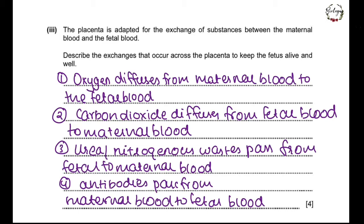The next question talks about the placenta. The placenta is adapted for the exchange of substances between the maternal and the fetal blood. Describe the exchanges that occur across the placenta to keep the fetus alive and well. Oxygen diffuses from the maternal blood into the fetal blood. Carbon dioxide diffuses from the fetal blood to the maternal blood. Urea or nitrogenous wastes pass from the fetal blood to the maternal blood. Antibodies and hormones — like HCG, estrogen, and progesterone — all pass from the maternal blood into the fetal blood.